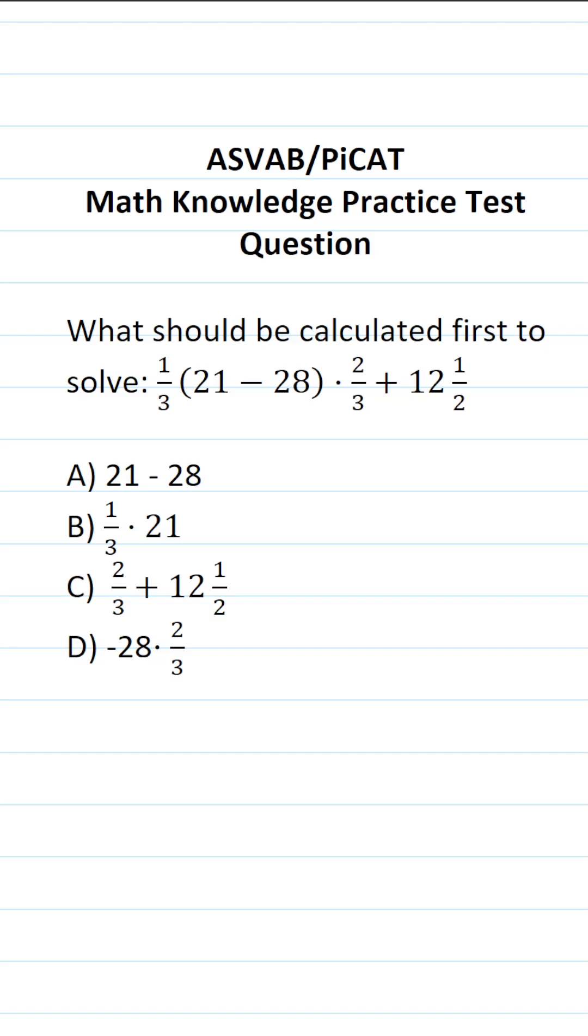This math knowledge practice test question for the ASVAB and PiCAT says, what should be calculated first to solve one-third times 21 minus 28 in parentheses times two-thirds plus 12 and a half?